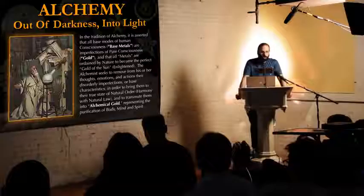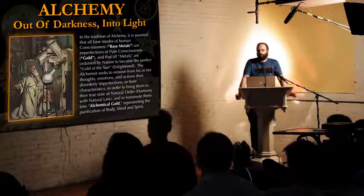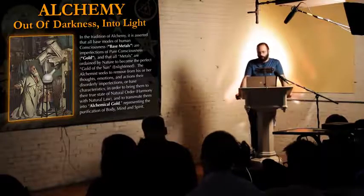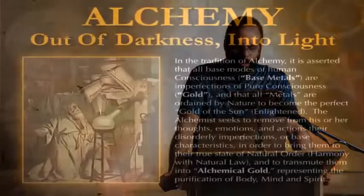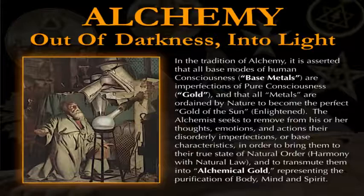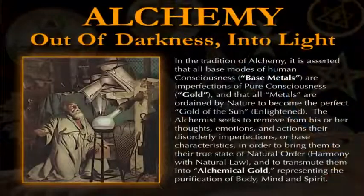In the tradition of alchemy, it is asserted that all base modes of human consciousness, which are called base metals in alchemy, are imperfections of pure consciousness, or what the alchemists symbolically called gold, gold consciousness. In alchemy you're dealing with the transmutation of metals from one form into another form, but they're not really talking about metals, they're talking about qualities of human consciousness. That's what these metals are, they're modalities of consciousness.